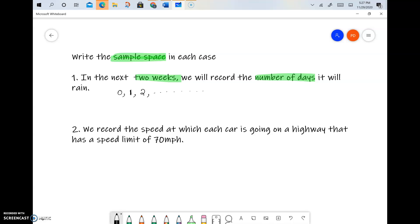So two weeks would be 14 days, so it is possible that it could be raining for all 14 days. So there is an upper limit, and since it's a list we've separated the outcomes by commas and we use the curly brackets.